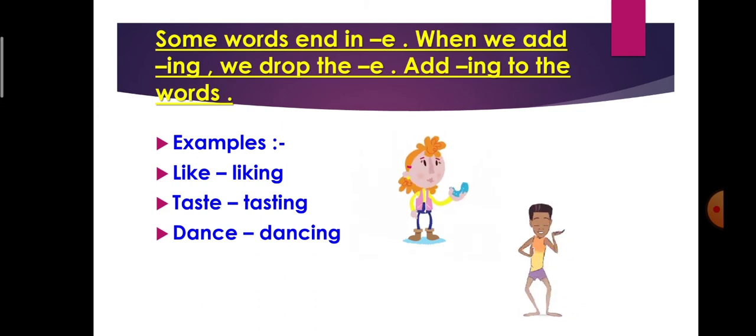Next is taste, t-a-s-t-e. Last letter kya hai, 'e'. Toh, iska 'e' hum remove karenge. Aur, uski jagah par -ing add karenge. Now, it will become tasting. T-a-s-t-i-n-g. Next is dance, d-a-n-c-e. So, in this word, we will remove 'e' and add -ing. D-a-n-c-e dance. Now, it will become d-a-n-c-i-n-g dancing.